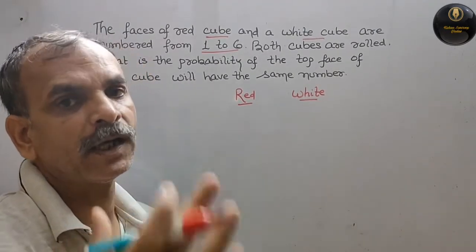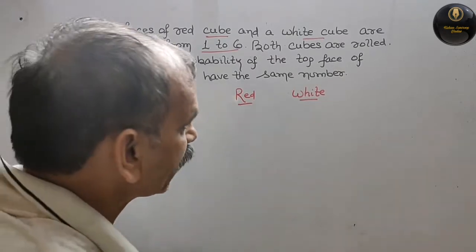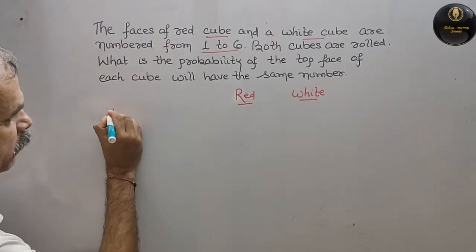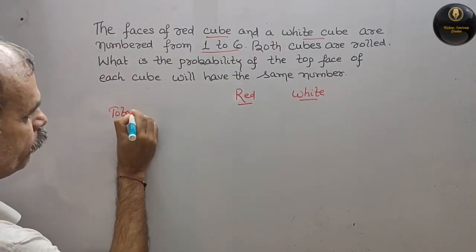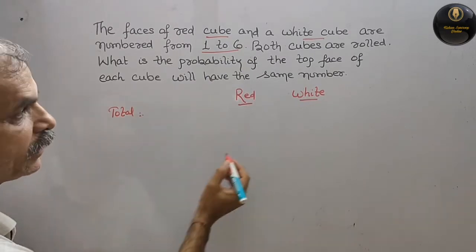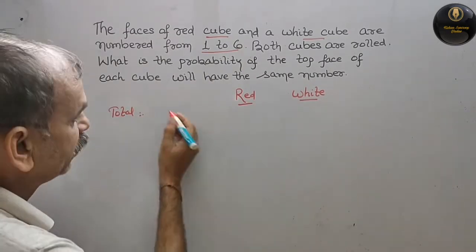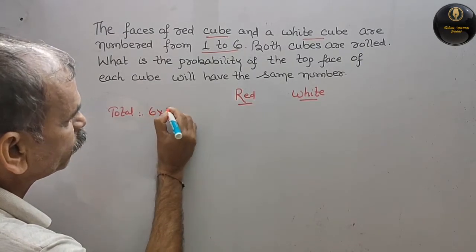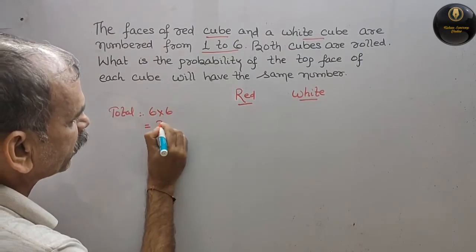Total outcomes - we can write total outcomes. Total is red and white, 6, so we will do 6 into 6, that is equal to 36.